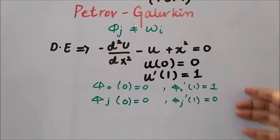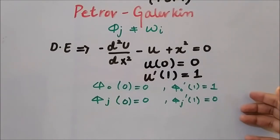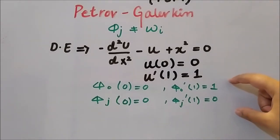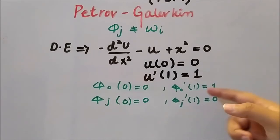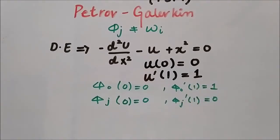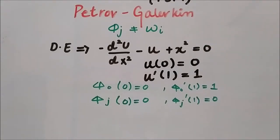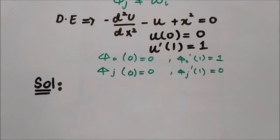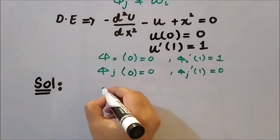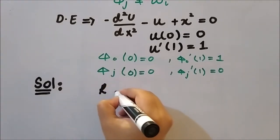This recall from previous videos helps us decide the structure of phi_naught, phi_j, and also the weight function, since we have the key assumption that the shape function is not equal to the weight function. The first step in solving this differential equation with the Petrov-Galerkin method is to define the residual, which is the left-hand side minus the right-hand side.